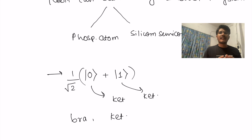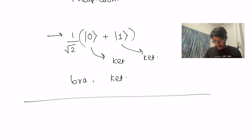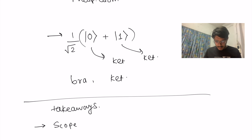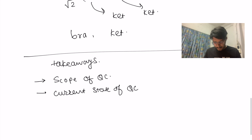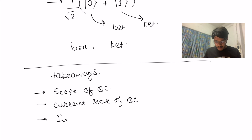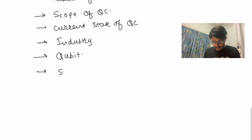This is the basic introduction to quantum computing — what is unique about it and how it differs from classical computing. The key takeaways from today's lecture are: scope of quantum computing, current state of the quantum computing industry, what is a qubit, and superposition.